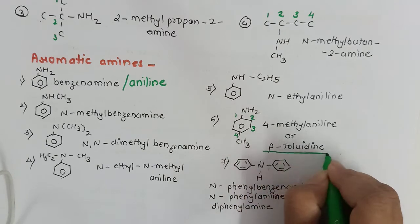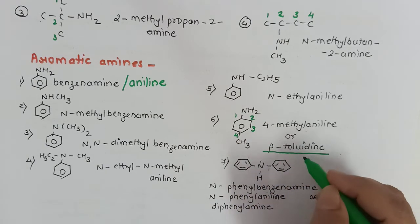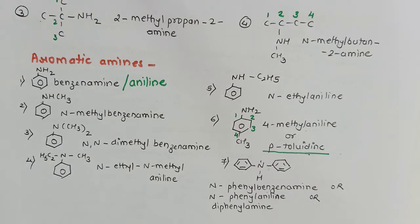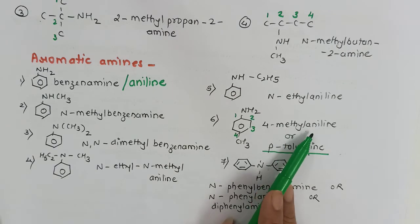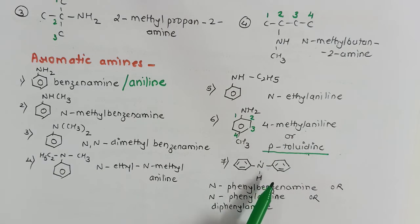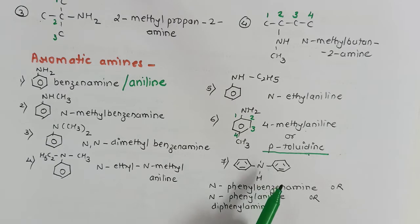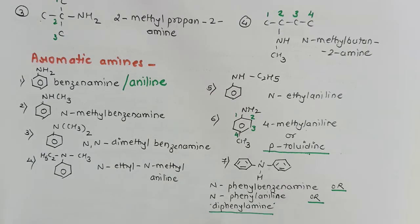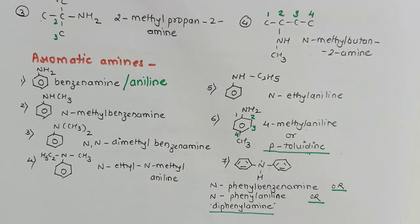The most commonly used name for 4-methylaniline is para-toluidine, which appears in word problems — students often forget the structure, so remember it as 4-methylaniline. If hydrogen in aniline is replaced by a phenyl group, it is named N-phenylbenzenamine, N-phenylaniline, or commonly diphenylamine. That concludes the nomenclature of amines.